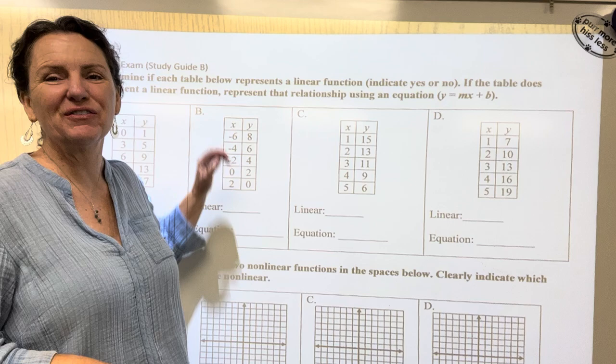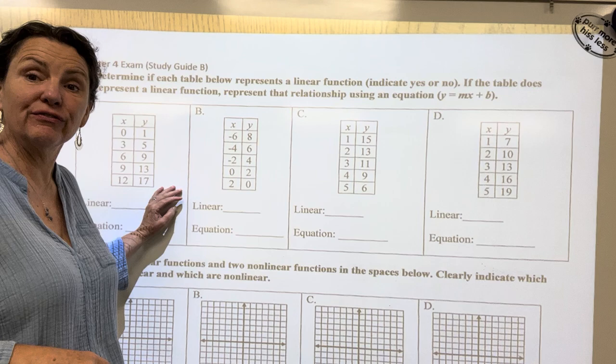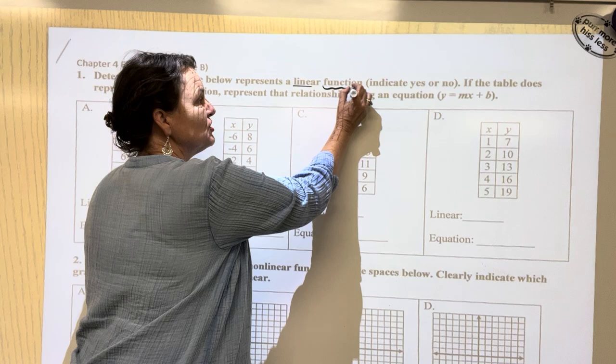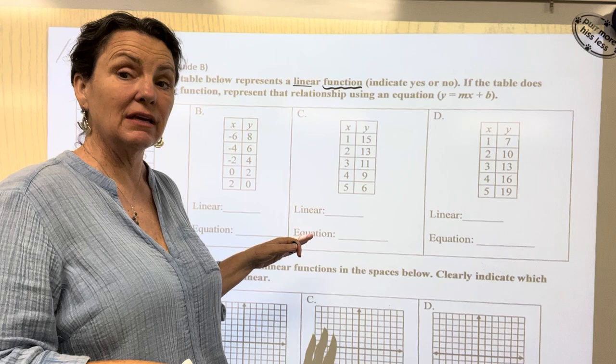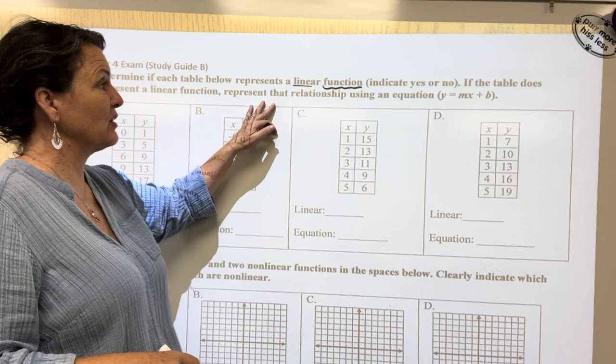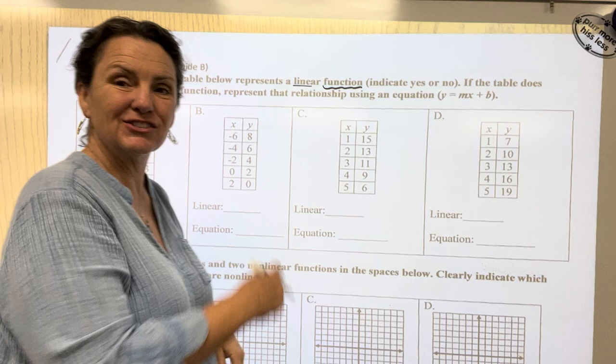Let's read the first set of directions. So determine if each table below represents a linear function. Linear, something that forms a line. A function is something that passes the vertical line test. So we have a linear function. If you believe it's a linear function, we're going to say yes or no. If the table does represent a linear function, I also want you to create the equation, the formula. Okay, so let's look at the first one.